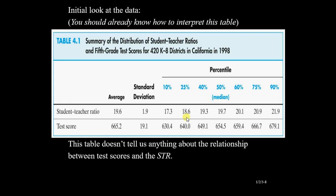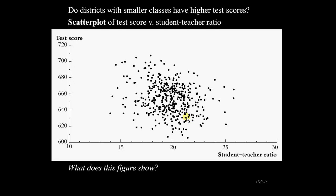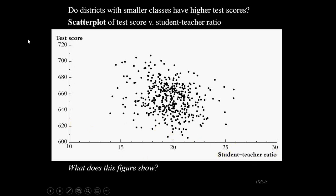Looking at student-teacher ratios, we have no idea how much test scores and student-teacher ratio are connected. So let's have a scatter plot. You can start the graph axis from 10 or 12. Here we see the scatter plot — class size, or student-teacher ratio, is on the horizontal axis, and test score is on the vertical axis. If you fit a line, one thing is clear: the slope is negative, and may be steep or less steep.